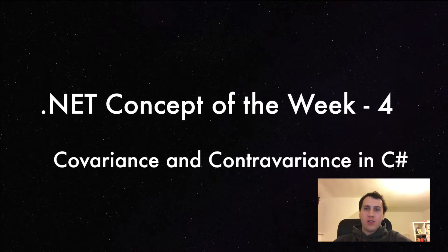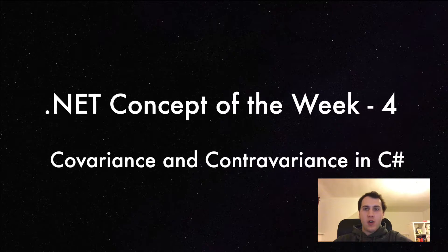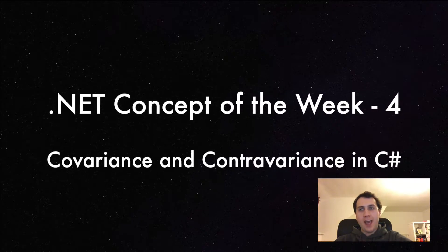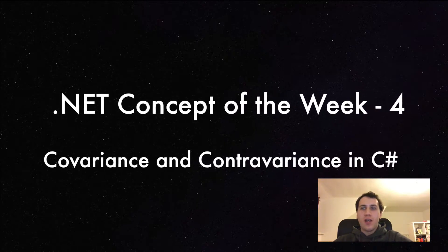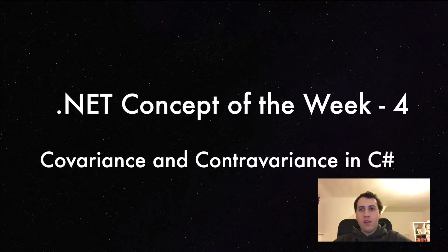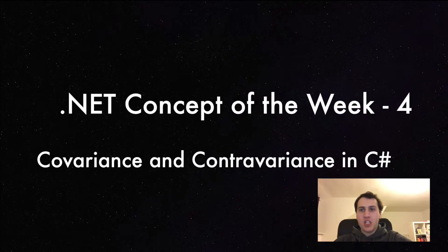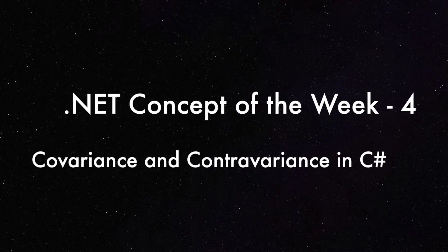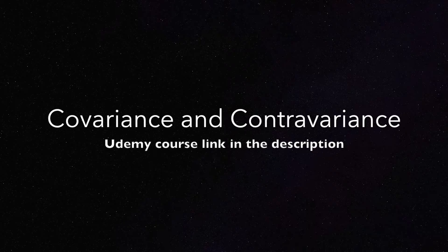Welcome to episode 4 of .NET Concept of the Week, where I explain a concept related to .NET programming every week in a short video. This time we are going to talk about covariance and contravariance in C#. I have a course on Udemy and a request came up that I should talk about this topic. The course itself is about high performance coding on .NET Core, but since covariance and contravariance is a great fit for the .NET Concept of the Week series, I will talk about it here.